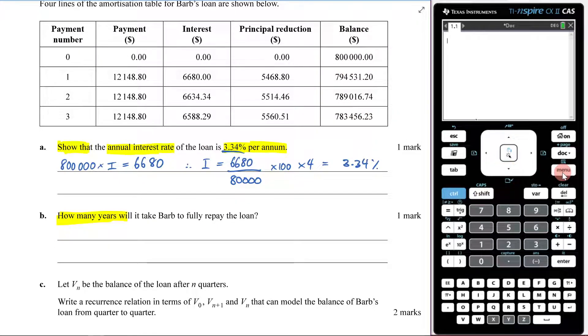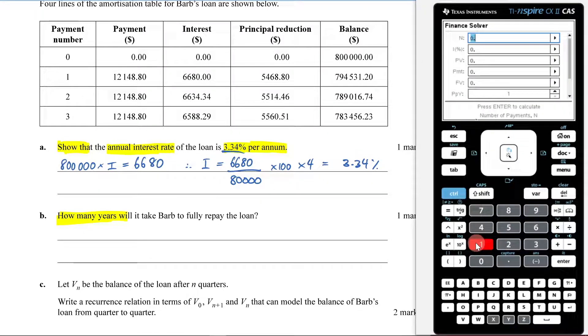So menu 8, 1, to bring that up nice and quickly. We're trying to figure out the amount of years. So N is the amount of quarters. So we're trying to figure out N there.